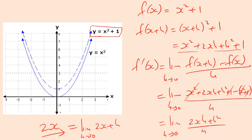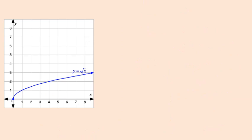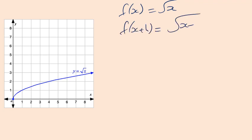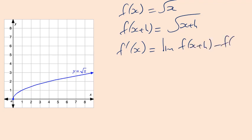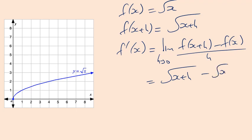In exams they never give you the simple stuff. Let's try something like f(x) = √x. f(x+h) — wherever there's an x, write x+h. Write down the definition from first principles: limit as h tends to zero of [√(x+h) minus √x] all over h. Now, don't tell me the √x and minus √x cancel — you cannot do that. √(x+h) is a single term; you can't split it up. So what do we do?